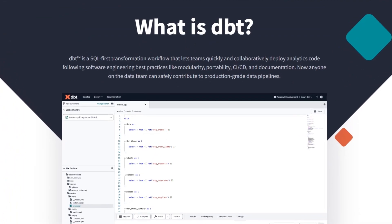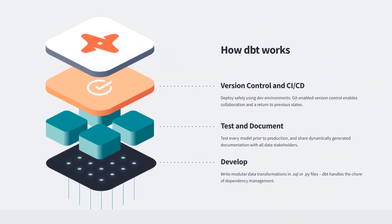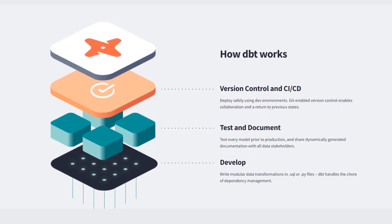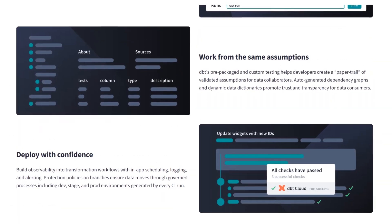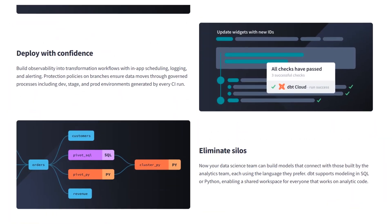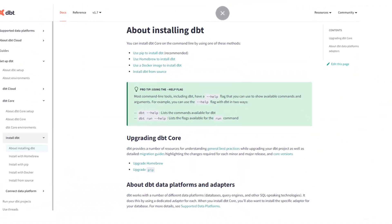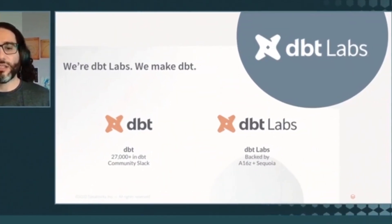DBT started out as a pretty simple command line tool that allowed you to define a bunch of transformations on your data sets in the data warehouse as a series of SQL statements, with a standard way of organizing, saving, and iterating on them with version control and tools like GitHub. Over time, Tristan and Drew realized this was actually a valuable tool to the rest of the data ecosystem. They ended up open sourcing it, and the open source project got more and more traction, growing into a full company renamed as DBT that raised about $150 million.